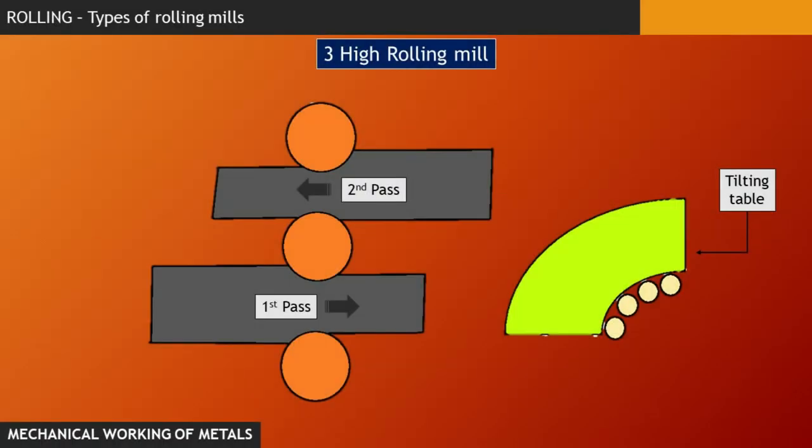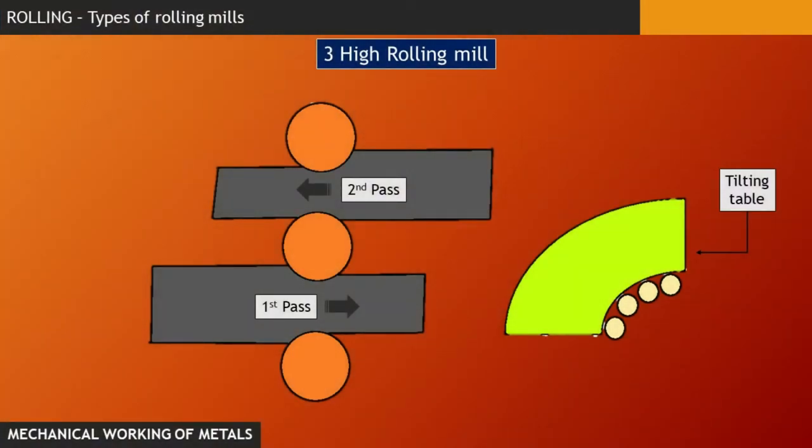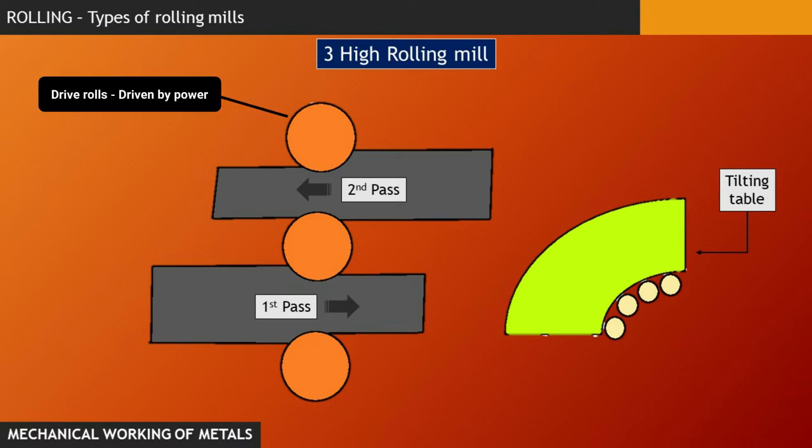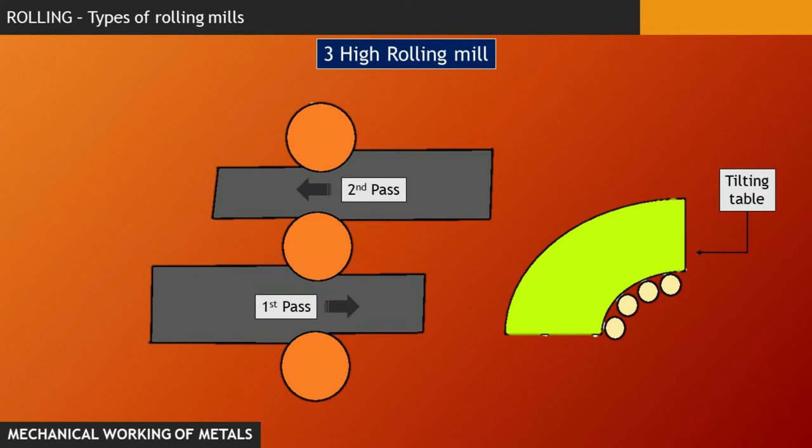Now, there are certain disadvantages regarding two-high reversing mill. So to eradicate those disadvantages, we have a three-high rolling mill, in which three rolls with a constant direction of rotation are arranged in a single vertical plane, and lifting or tilting tables are provided on one or both sides of the stand to raise and lower the bar after each pass. In this kind of mills, the top and bottom rolls are drive rolls, which are actually getting driven by power supply. However, the middle roll is rotating purely by friction. This kind of mills are employed as blooming mills for billet rolling and finish rolling.